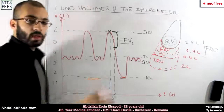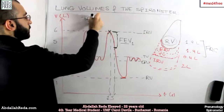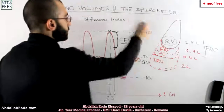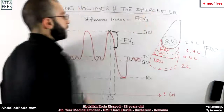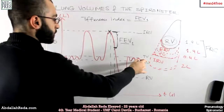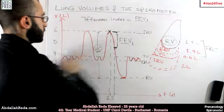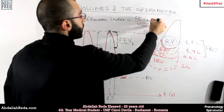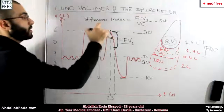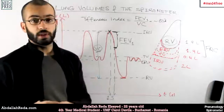FEV1 is a very important term — remember it. There is a common ratio called the Tiffeneau index. The Tiffeneau index is the ratio between the forced expiratory volume FEV1 and the vital capacity — which is the expiratory reserve volume, tidal volume, and inspiratory reserve volume combined. The normal ratio is around 80%. If there is a problem with that ratio, it means there is a lung malfunction — it could be a restrictive or an obstructive condition.